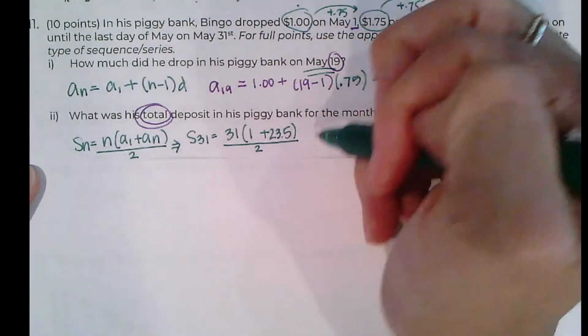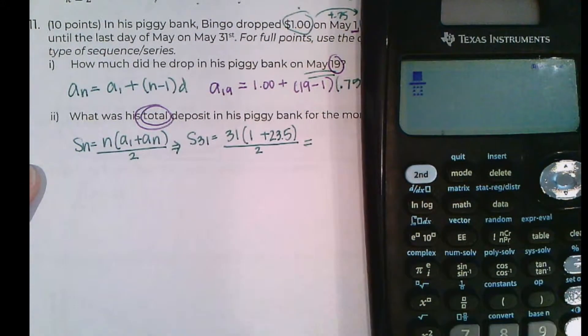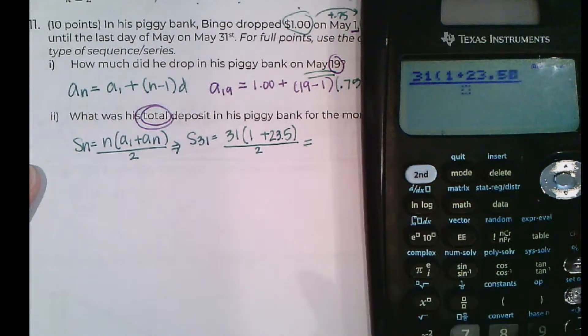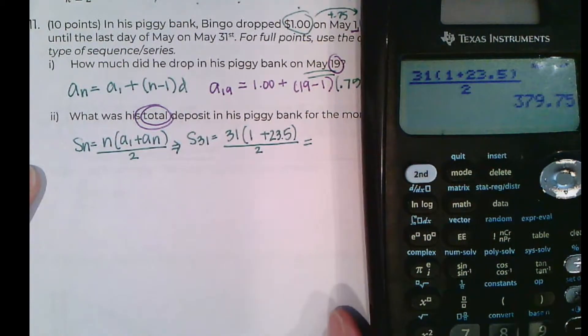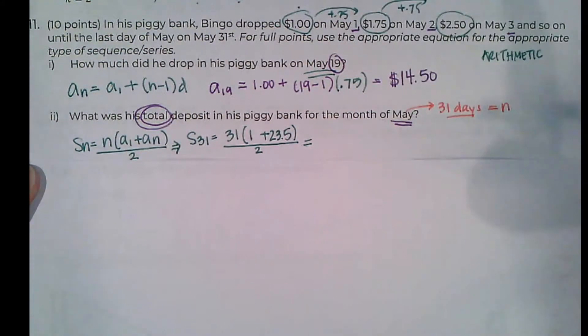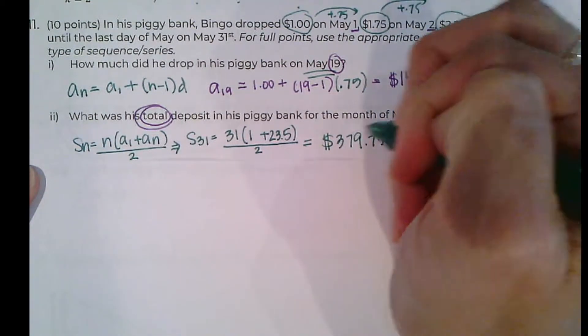And then this I can type into my calculator. So fraction 31 times 1 plus 23.5 all over 2. $379.75.